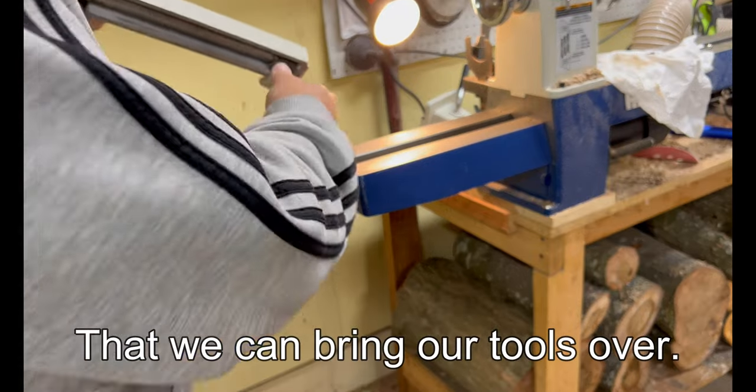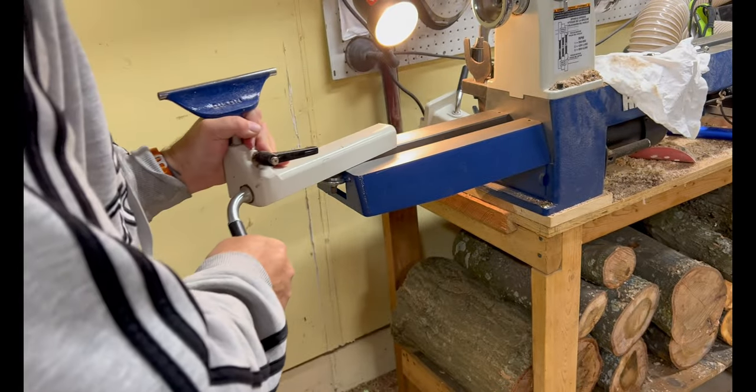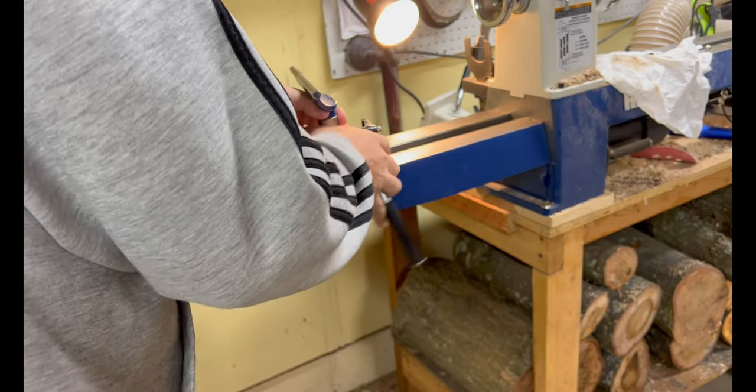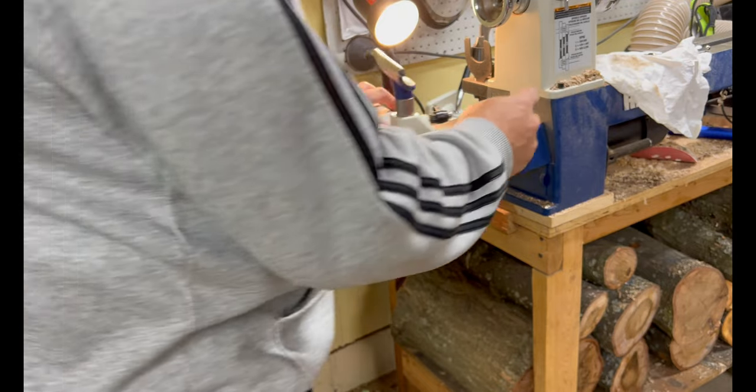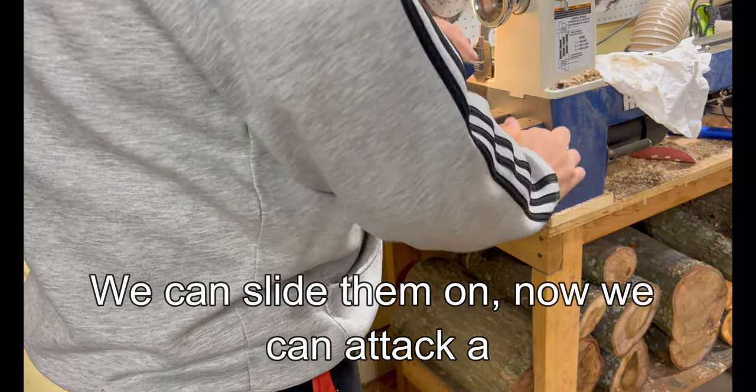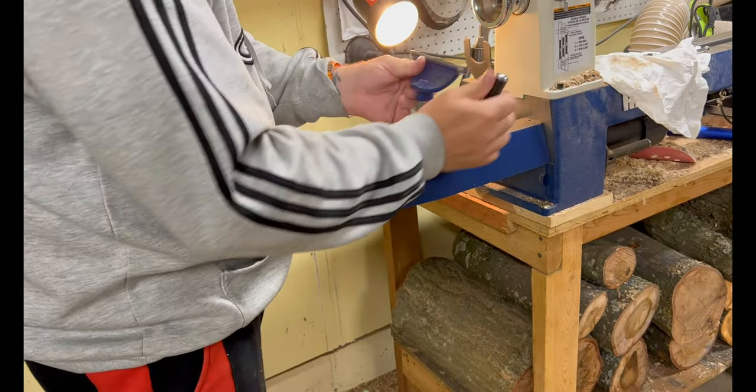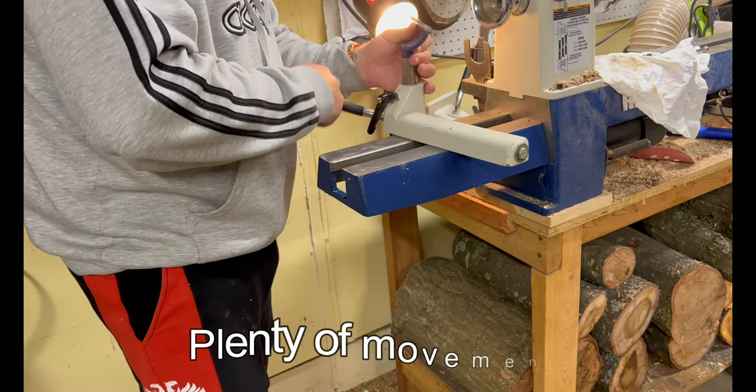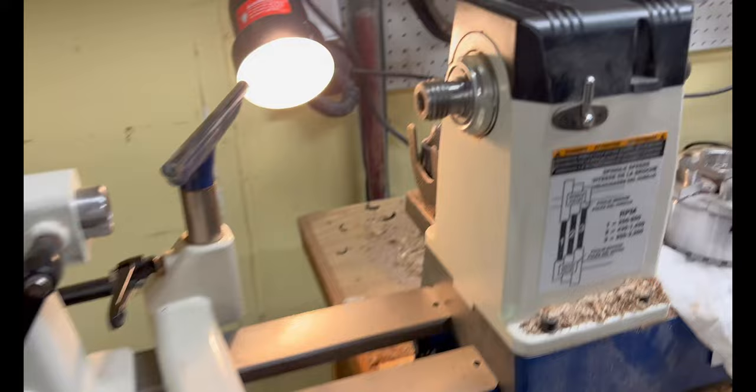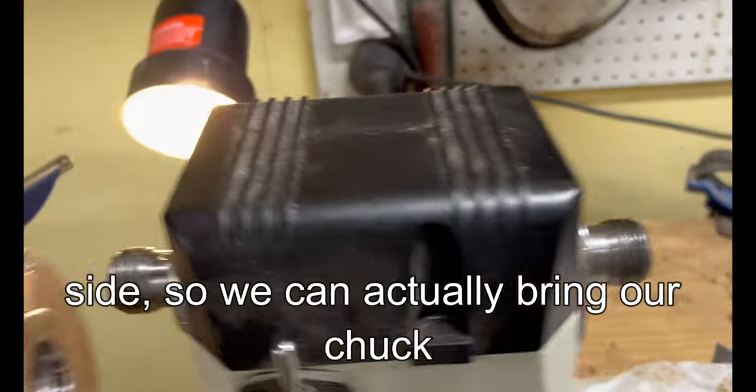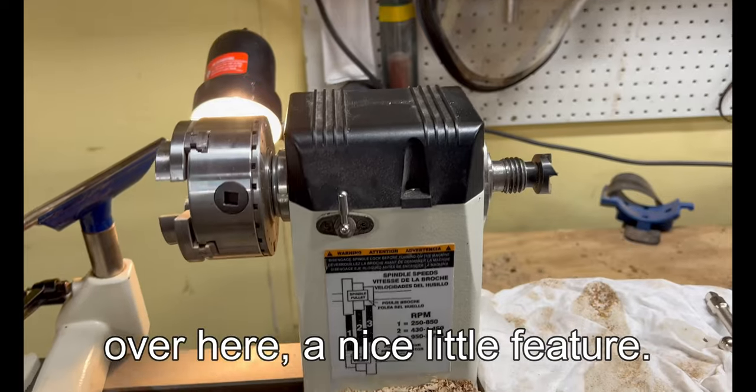So now we can bring our tools over. We can slide them on. Now we can attack a bowl from this angle. We have plenty of movement here. Here's a closer look. So we have threads on this side and on this side, so we can actually bring our chuck over and mount it here. Nice little feature.